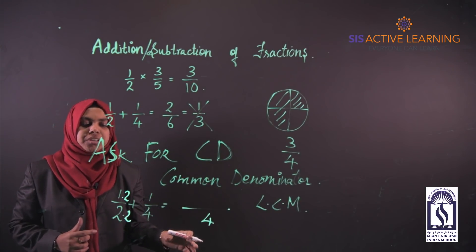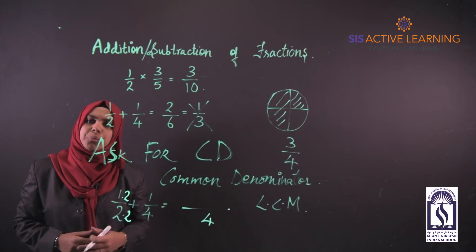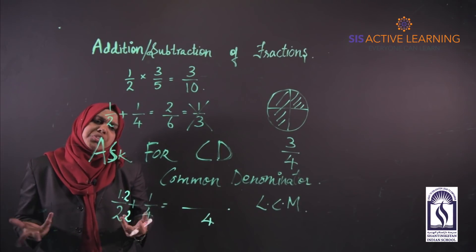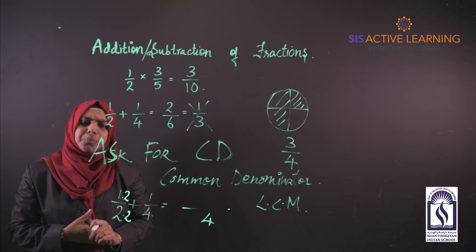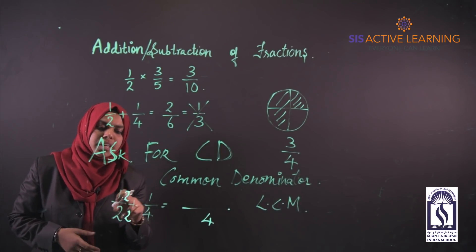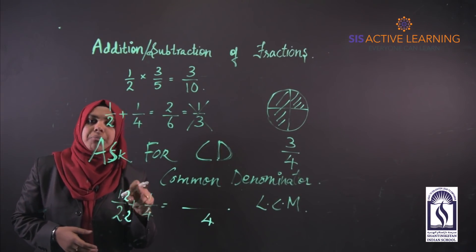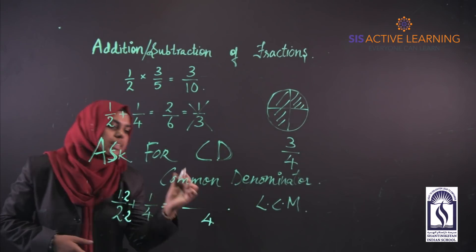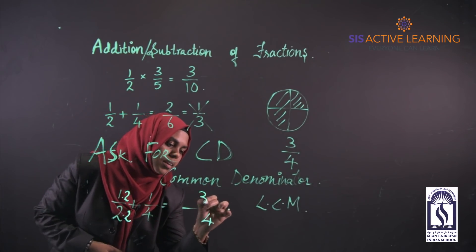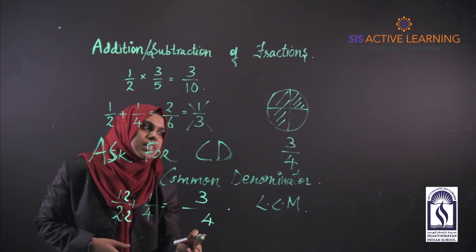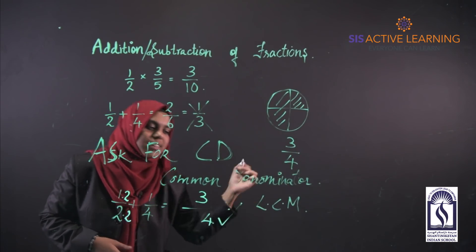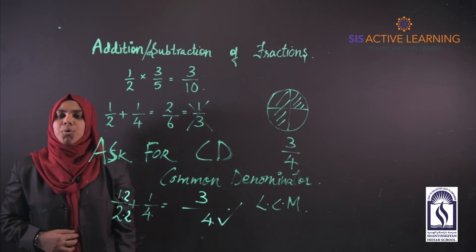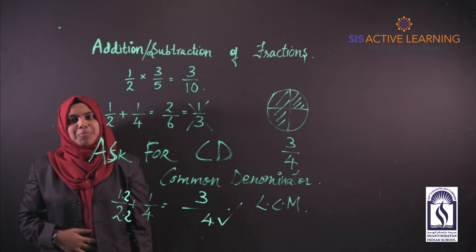With the common denominator set, we just add the numerators: 2 + 1 = 3. So 3/4 is the answer — correct! Now we will do more problems.